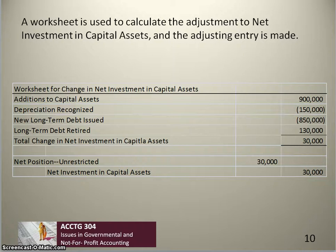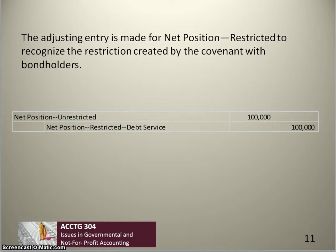Next we adjust restricted net position to recognize the restriction created by the covenant with the bondholders. We added $100,000 of new restricted net assets, so we increase net position restricted for debt service by $100,000 and decrease net position unrestricted by $100,000 as the offsetting entry. Total net position again remains unchanged.